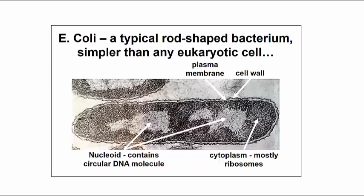Here are the basic parts: plasma membrane, cell wall, the cytoplasm — the interior of the cell containing the cytoplasm, which has mostly ribosomes — and the lighter region of the cell, which is called the nucleoid, which actually contains the bacterial DNA, which is not associated with a lot of proteins. It's basically a circular double helix, which you may remember from another course.